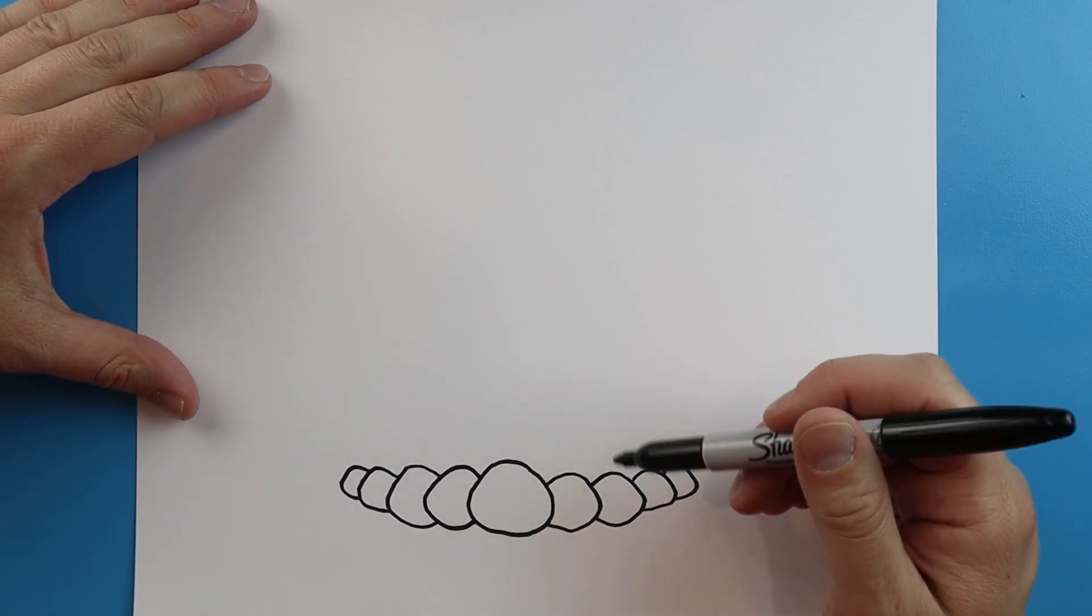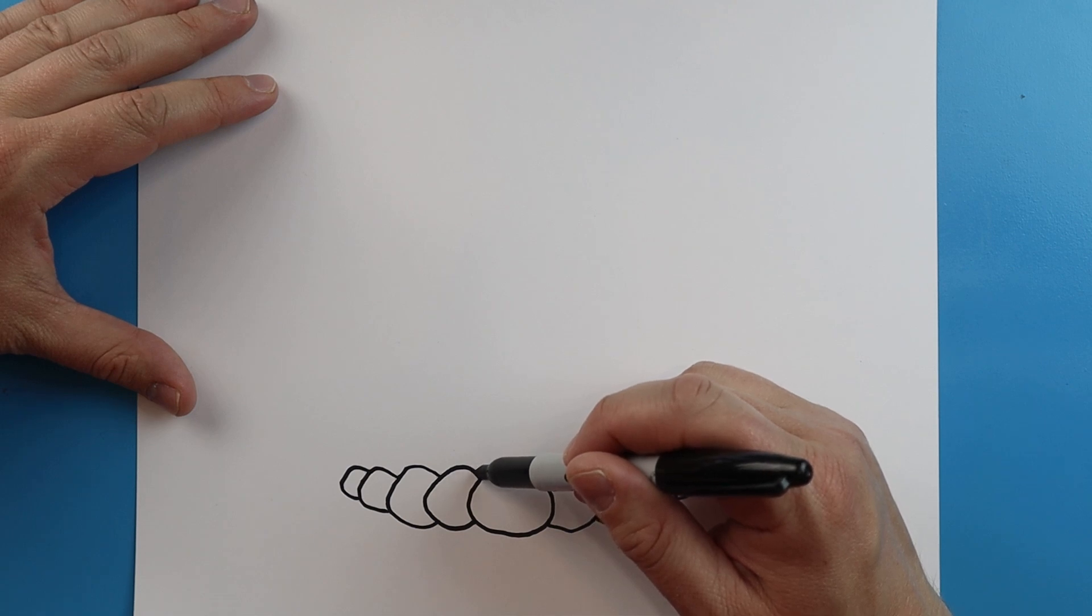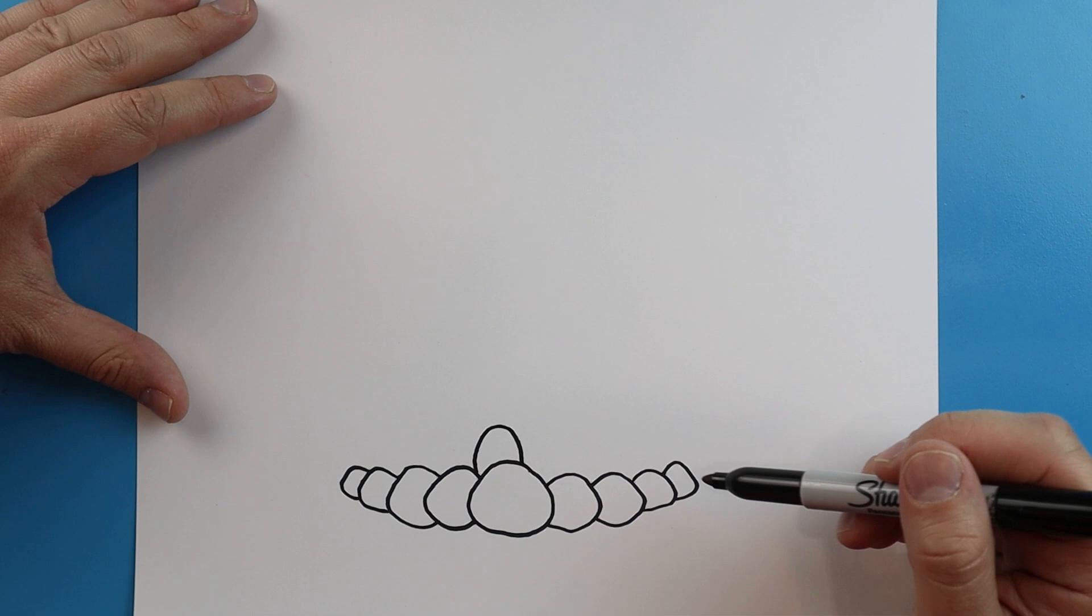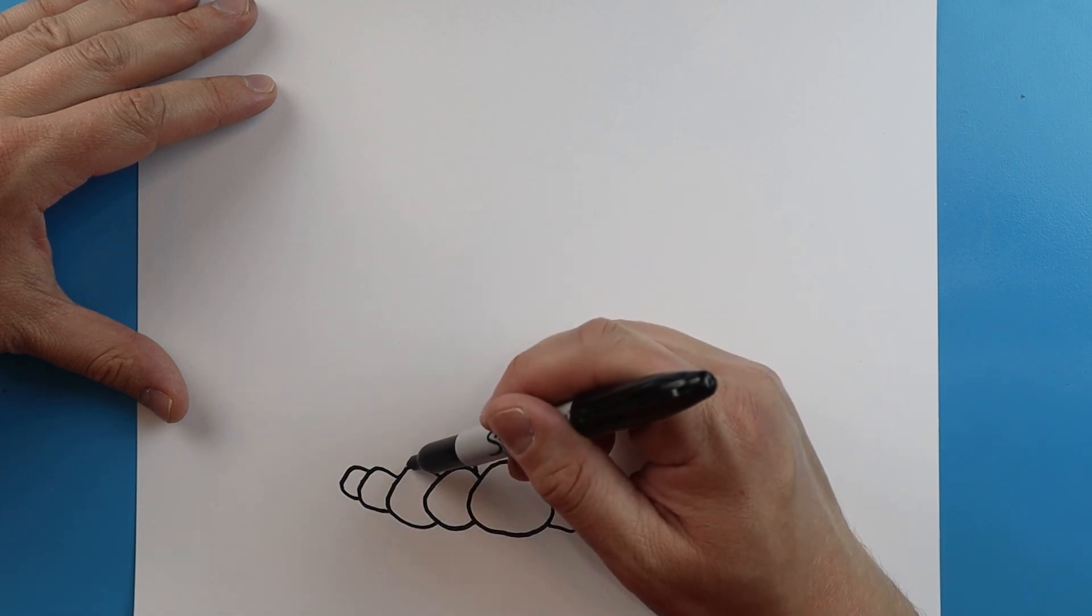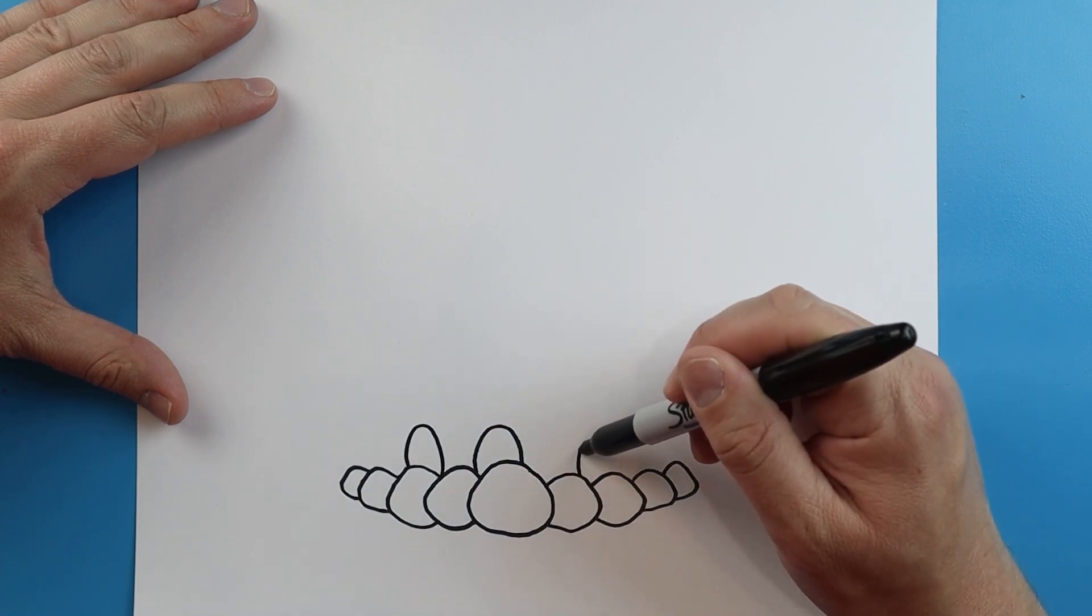Now to start off with this, I'm just going to begin by making more of a half oval right here. And then I'll put another half oval here.